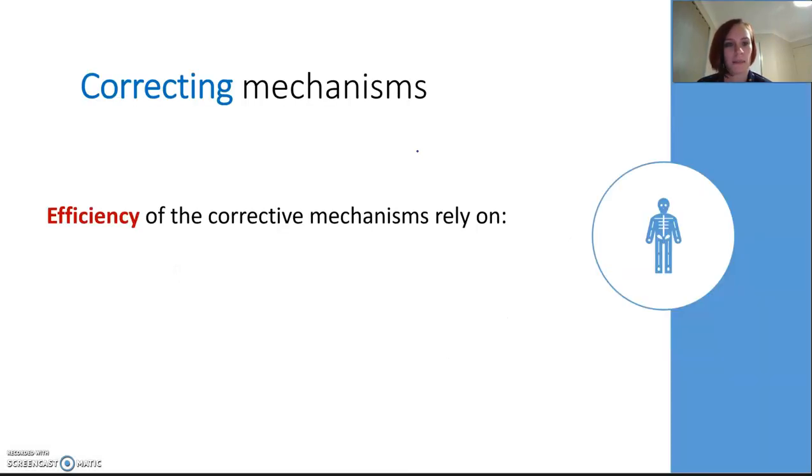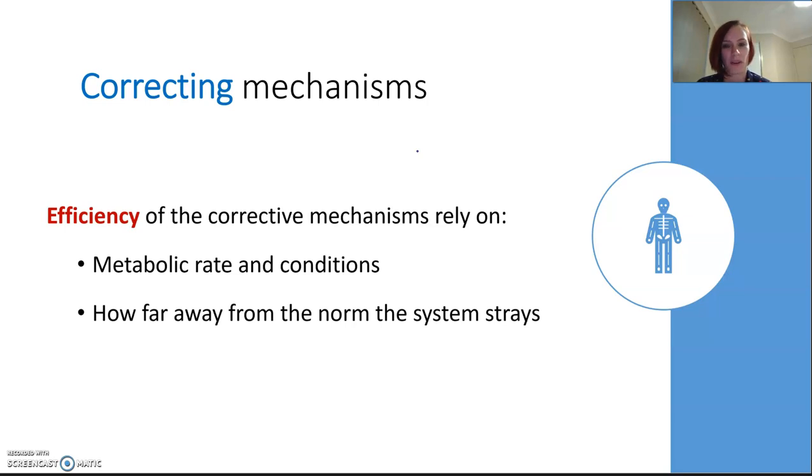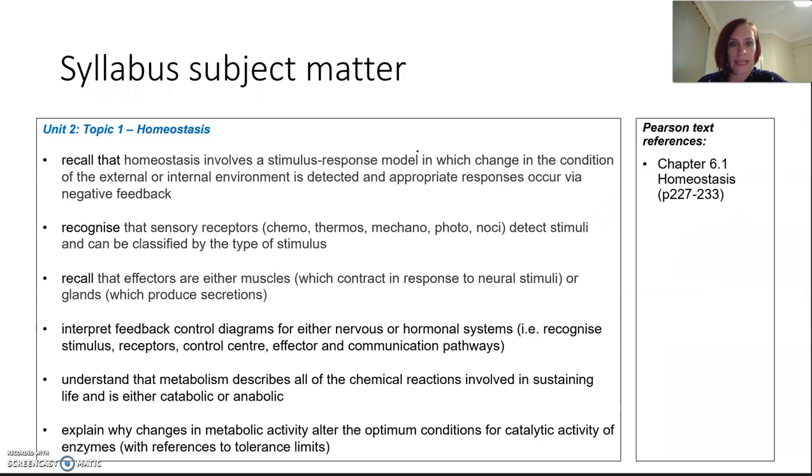Our correcting mechanisms—the efficiency relies on so many things. It relies on the metabolic rate and conditions, or the speed at which your body is doing all those chemical reactions. It's really important to know how far away from the normal the system is straying. Am I hypothermic, or is it just cold in Brisbane today at 15 degrees? We also have to think about what effector is being used. Do I need to engage a muscle, a whole system behavior change, or produce a hormone all of a sudden? Those things are going to change how efficient those correcting mechanisms are. As I said in the last lesson, there is quite a lot in this unit, so please make sure you do some reading.